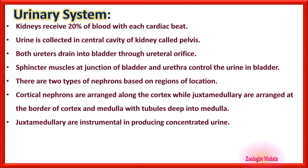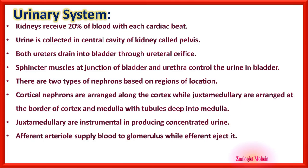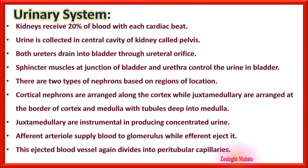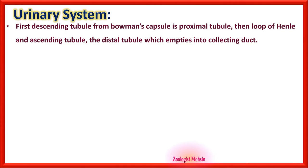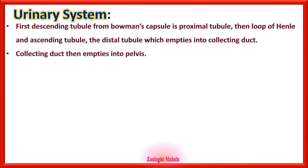Juxtamedullary nephrons are instrumental in producing concentrated urine. Afferent arterioles supply blood to the glomerulus, while efferent arterioles take blood away from the glomerulus; this ejected blood again divides into peritubular capillaries surrounding the proximal, distal, and loop of Henle tubules. The first descending tubule from Bowman's capsule is the proximal tubule, then the loop of Henle, then the ascending distal tubule, which empties into the collecting duct, which empties into the pelvis.